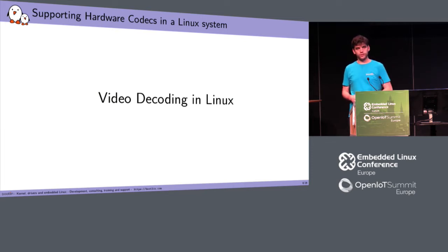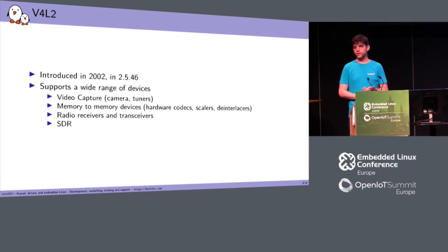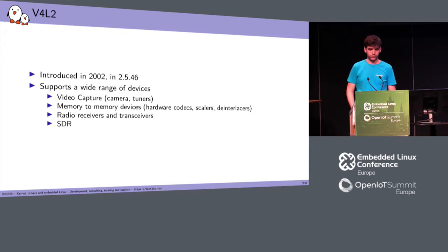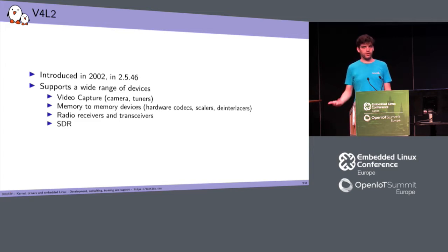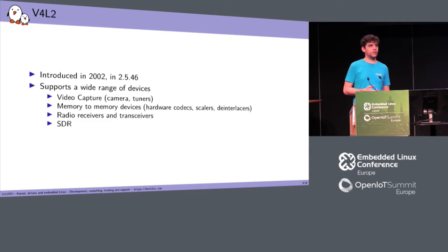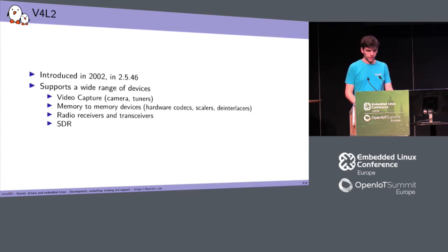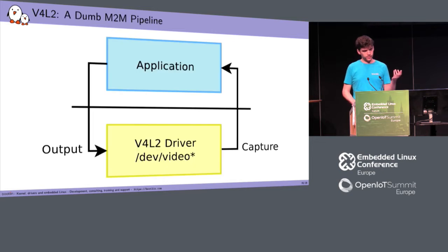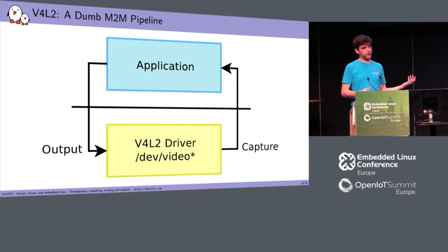To support stateful codecs in Linux, the API and framework we use is called V4L2 — Video for Linux 2 — introduced in 2002. It supports everything related to video in Linux: not just codecs, but also cameras, DVB receivers, and anything that produces or consumes video. V4L2 uses a subframework called M2M (memory-to-memory) to support stateful codecs.